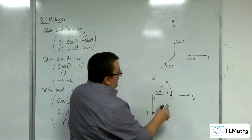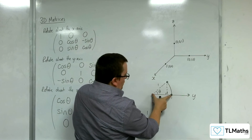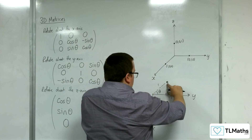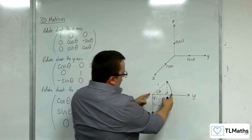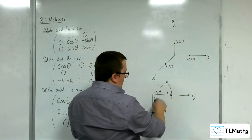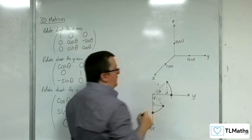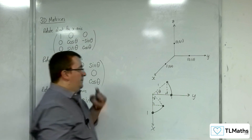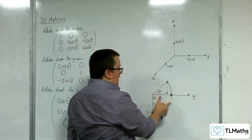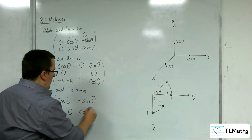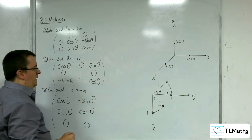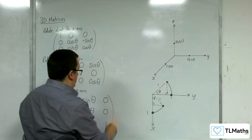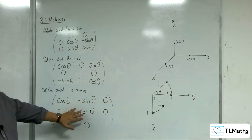As for the point (0, 1, 0), its x-coordinate was 0, but now its x-coordinate is the opposite side — and because that's positive, this will be negative sine theta. The y-coordinate is the adjacent of this right-angle triangle, and so that is cosine theta. Its z-coordinate will remain fixed at 0. And also (0, 0, 1) will remain fixed in the rotation, and so that is my rotation about the z-axis.